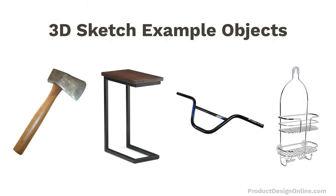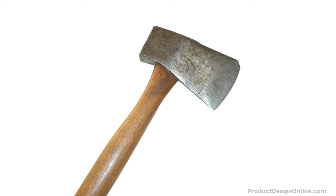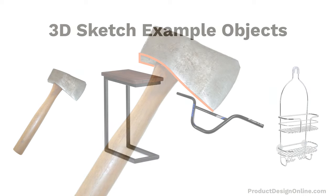Looking at this image, these are four great examples of items that would benefit from a 3D sketch. The shape of an axe is very unique because it tapers in multiple directions. Using a 3D sketch, we can minimize the number of sketches and other features needed to recreate the shape.